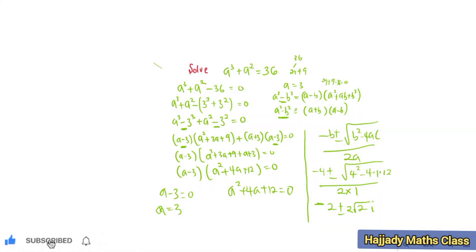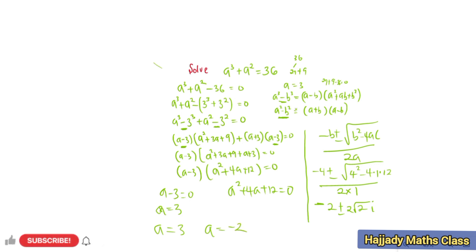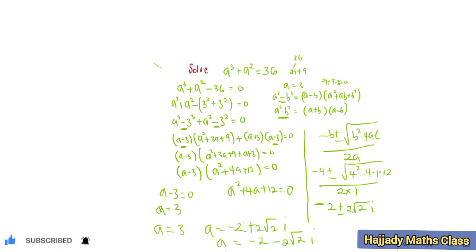So finally, I can say that a equals 3, that's the first root. And also, a can be negative 2 plus 2 root 2i. And lastly, a can be negative 2 minus 2 root 2i. Thank you very much, and please don't forget to subscribe to my YouTube channel.